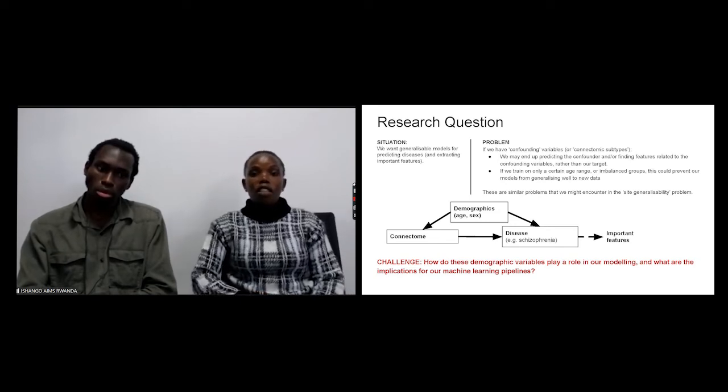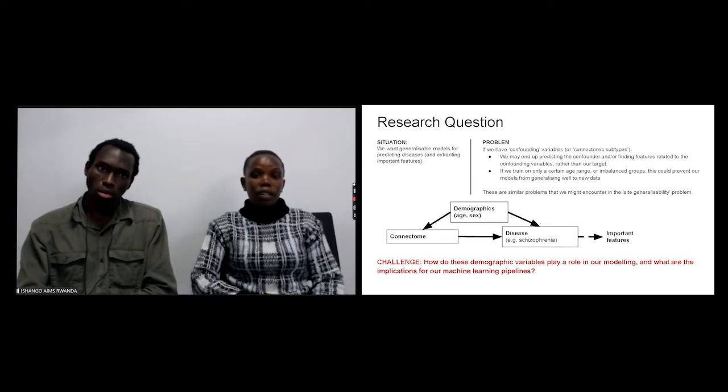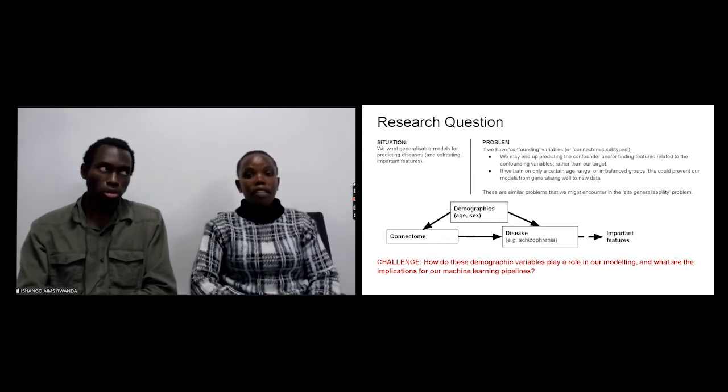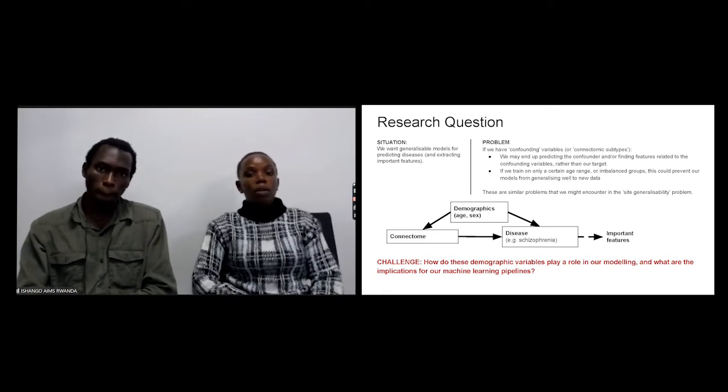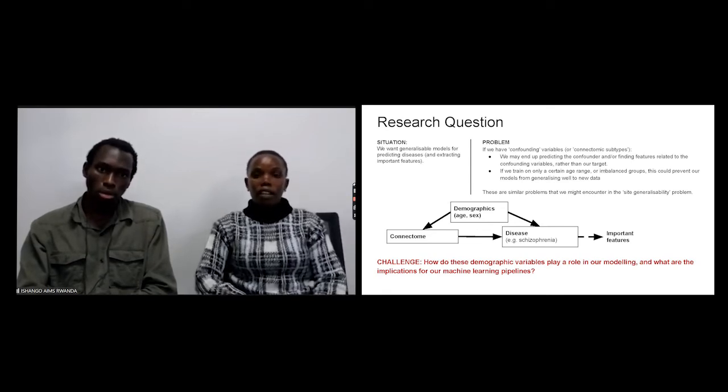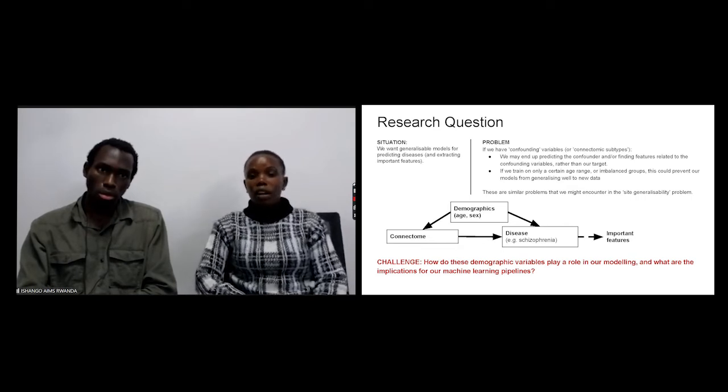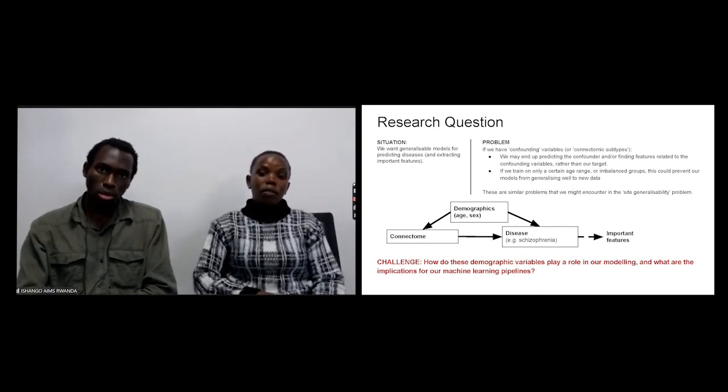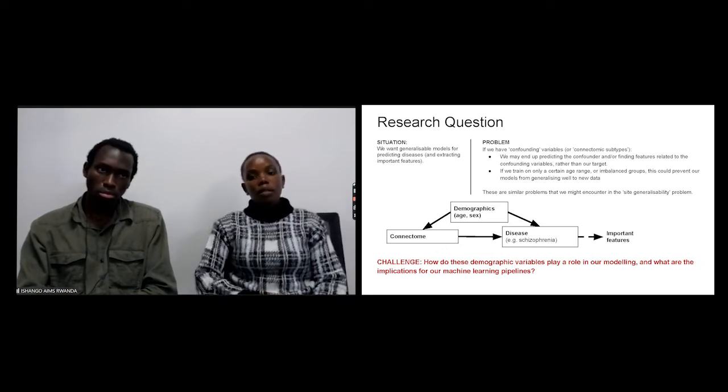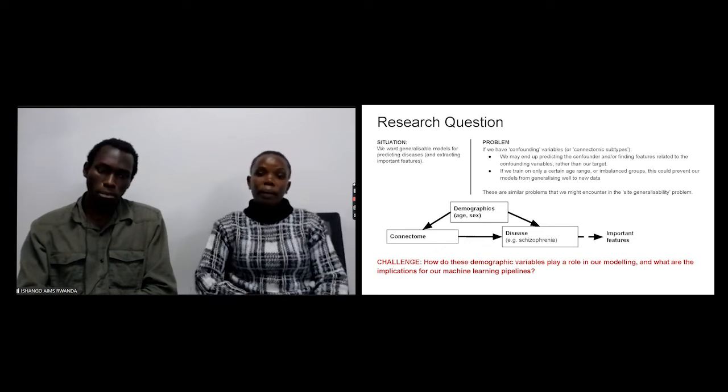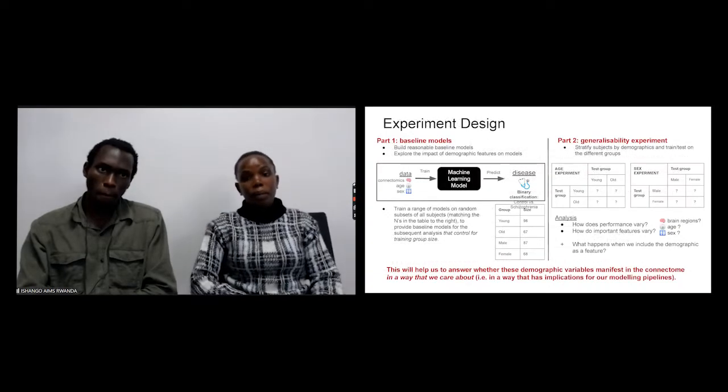If we have those demographic features, age and sex in our case, the model will not generalize well, especially when we are trying to train our models on an imbalanced data or only on a certain age range. From here we have the challenge to identify how these confounding variables play a role in our modeling, in their implications in our machine learning pipeline.